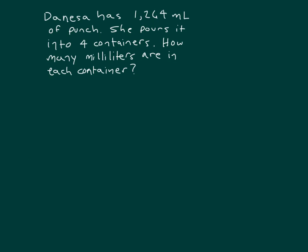Danessa has 1264 milliliters of punch. She pours it into 4 containers. How many milliliters are in each container? Can we draw something to help us solve this problem? Yeah, we can. Let's draw a tape diagram.